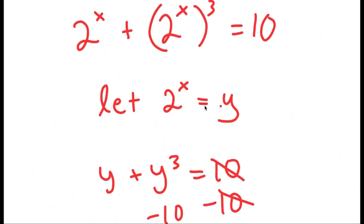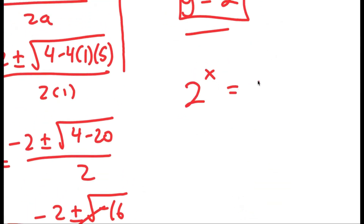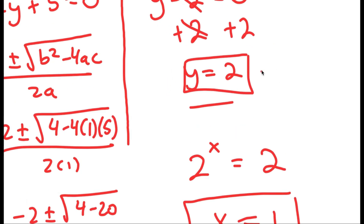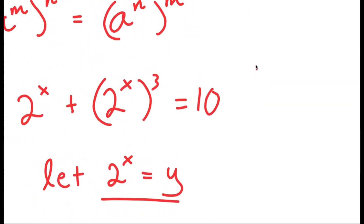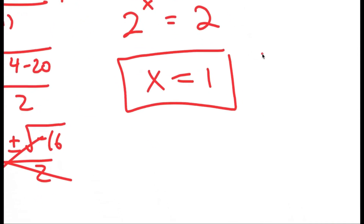Remember, we're solving for x, not y. We let 2 to the power of x equal y, so 2 to the power of x equals 2. The only solution is x equals 1, because 2 to the power of 1 equals 2. So x equals 1 is my solution to this equation. Please subscribe, leave a like, and share this video.